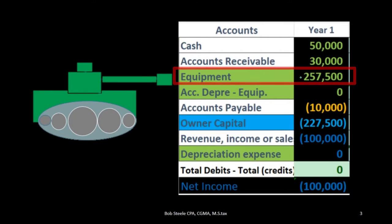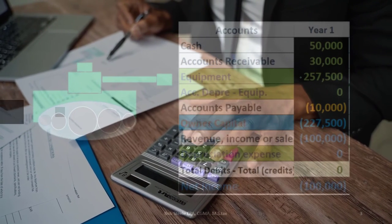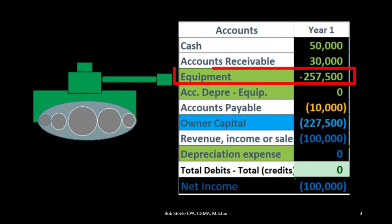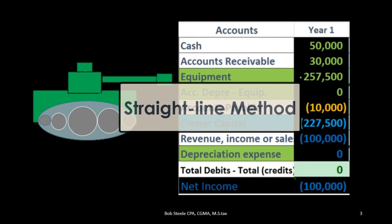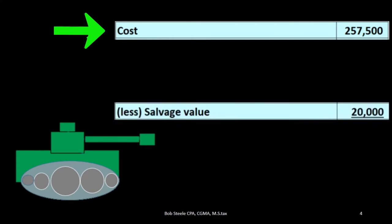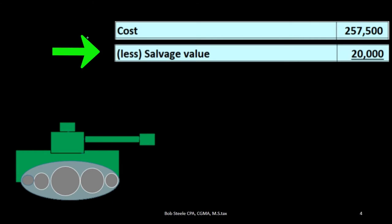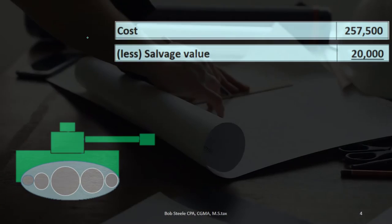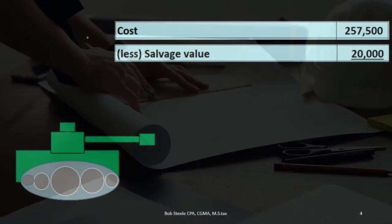At the end of the useful life, we want to bring the book value of this equipment down to what we believe the salvage value will be — the amount that we can scrap the equipment for at the end of its useful life. If we use a straight-line method, we may do a calculation such as this: the cost of the equipment minus the salvage value — the amount we believe we can scrap or sell the equipment for at the end of the useful life — divided by the life that we believe the equipment will be used to help us generate revenue.